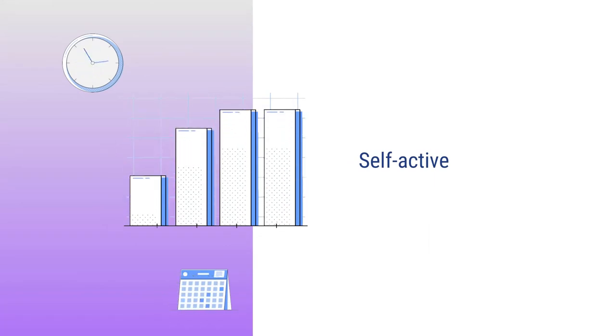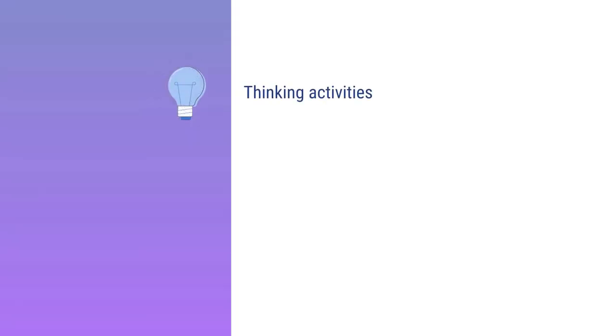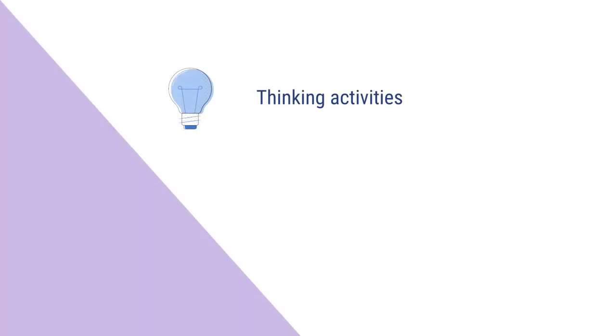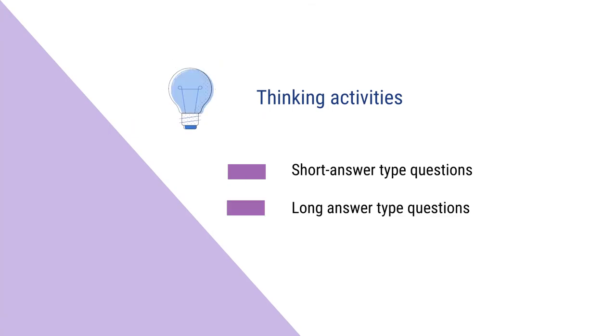Most importantly, they are self-active. Why do we call them self-active? Because they keep the learners engaged all the time, they keep the learners active all the time. They do it by giving three different kinds of activities. The first of them are thinking activities, the second are doing activities, and the third are writing activities. Thinking activities are there in the form of self-assessment questions. These questions are of various types — they could be short answer type questions, they could be long answer type questions. These questions prompt the learners and motivate them to use their higher order thinking skills and critical thinking abilities.